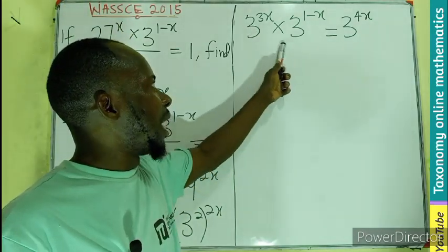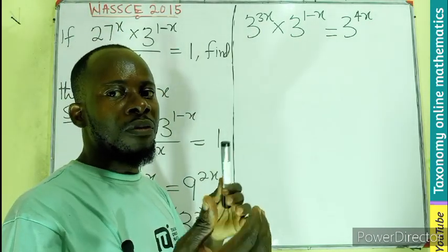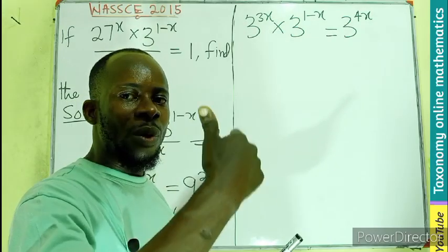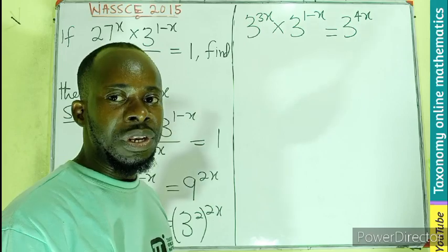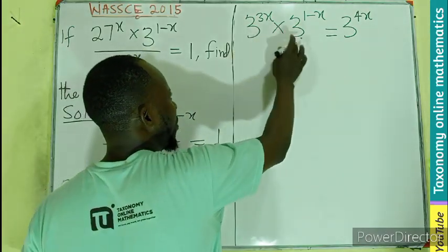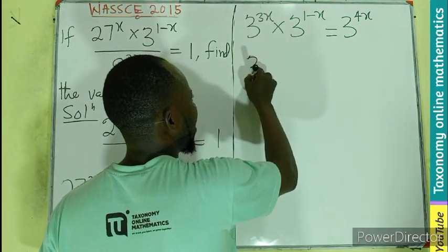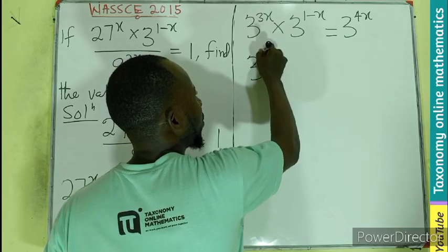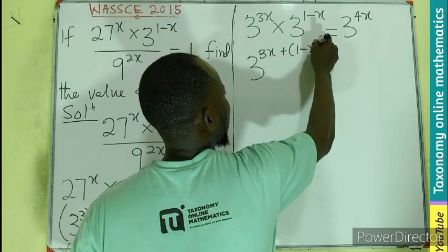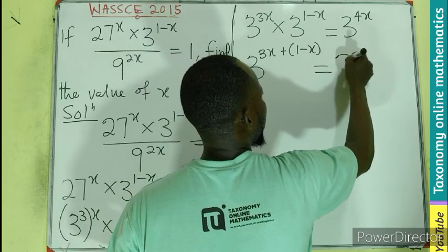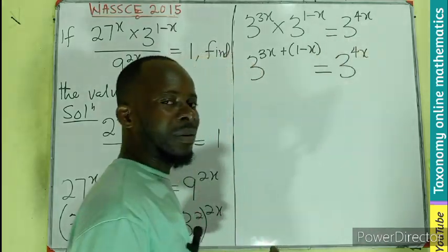We can see the left is having a product of equal bases. So we are going to add the exponents using the multiplication law of indices. So I have the same base. It means that 3^(3x + 1 - x) should be equal to 3^(4x).